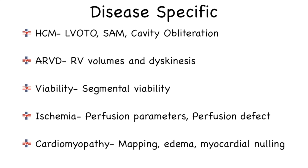In patients with ARVD or suspected ARVD, it is important to comment on RV volumes, especially indexed volumes and right ventricular ejection fraction, along with specific wall motion abnormalities. In patients referred for viability assessment, segmental viability in all 17 segments must be commented upon. For patients undergoing cardiac MRI for ischemia assessment, it is important to comment on perfusion parameters — the heart rate and blood pressure response to adenosine stress perfusion and whether a perfusion defect is present. In cardiomyopathy patients, mapping values are very important and myocardial nulling sequences must be reviewed, especially in amyloid cardiomyopathy.